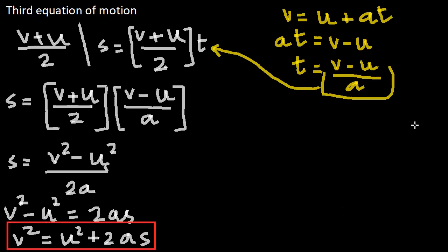We'll take a short example to solve a question using this third equation of motion. The quantities involved in this third equation of motion are the final velocity, the initial velocity, the acceleration, and the displacement — so these four quantities are involved.